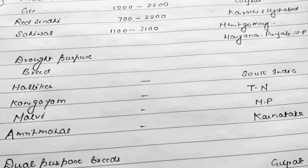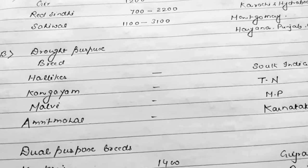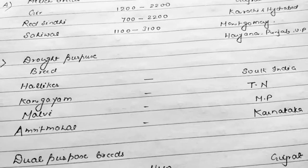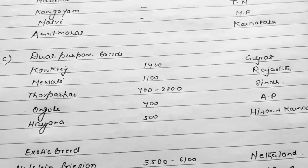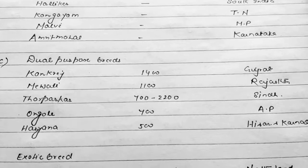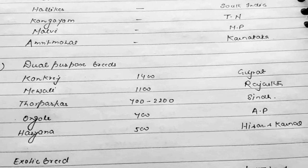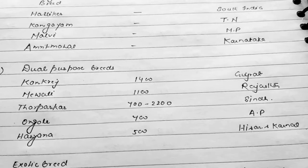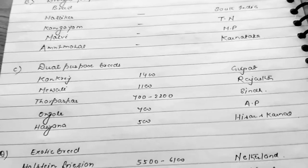Drought purpose breeds include Kangayam distributed in Tamil Nadu, Malvi originated in Madhya Pradesh, and Amrit Mahal used in Karnataka. For dual purpose breeds, there are basically five types used in India: Kankrej distributed in Gujarat, Mewati in Rajasthan, Thar Parker in Sindh, Ongole in Andhra Pradesh, and Hariana in Hisar/Karnal. These were the dual purpose breeds of cattle.